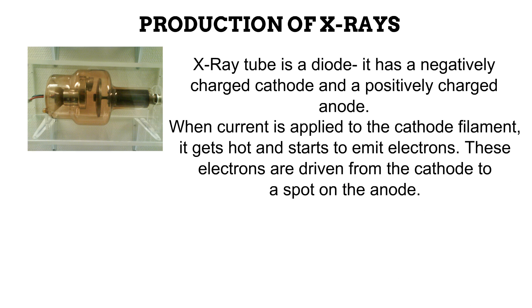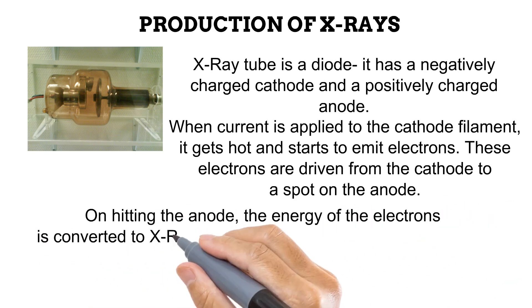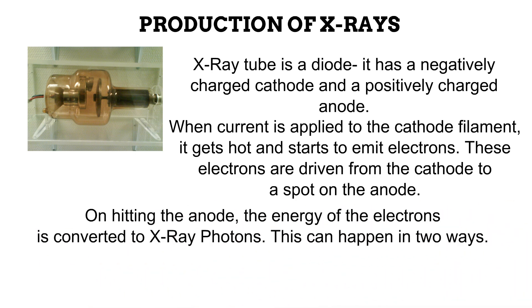The released electrons are driven by a potential difference, also known as kilovoltage, from the cathode where they are released, to a spot on the anode known as the focal spot. When the electrons hit the focal spot, the energy of these electrons is converted to X-ray photons. This is the basis of X-ray photon production.